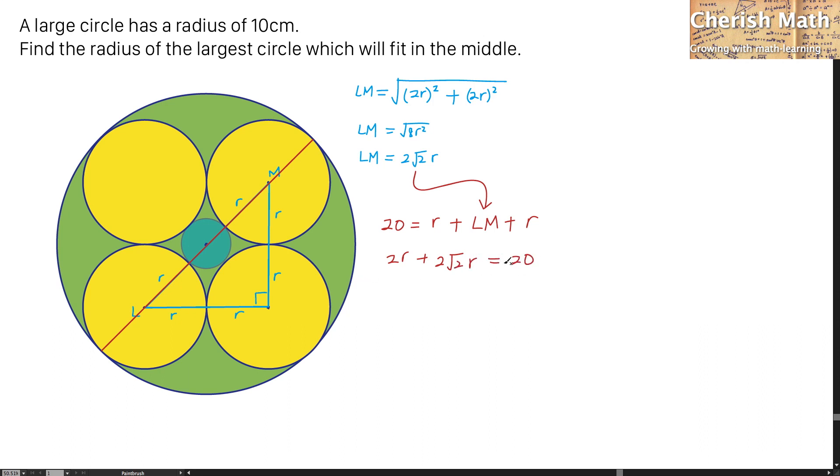And I'm going to simplify this part. That will be R plus square root of 2R equal to 10. Rearrange a thing that would turn out as R equal to 10 divided by 1 plus square root of 2.